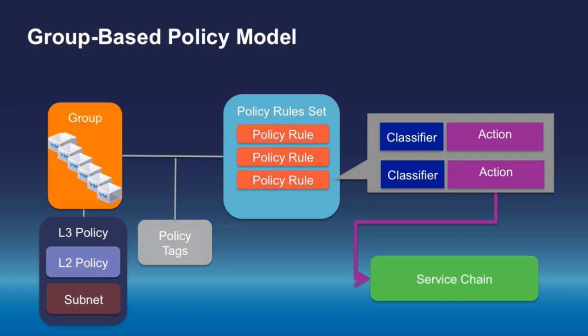Furthermore, we define actions — what type of traffic we allow, what direction: from application 1 to application 2, vice versa, bi-directional, or unidirectional. We can even go one step further and add service chaining. With group based policy, we do this abstraction level to mimic the real end intent of the deployment.